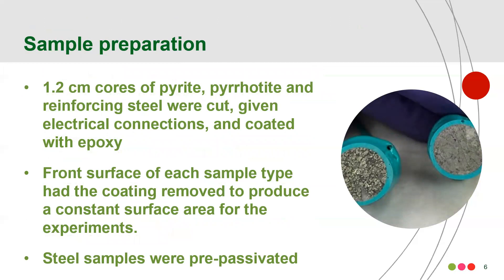Sample preparation followed basic electrochemical principles. 1.2 cm diameter cores of pyrite and pyrite were cut from neurological samples. Similar diameter cylinders were produced from smooth reinforcing steel. They were given electric connections and coated with epoxy, with a different type of epoxy being used for the steel samples based on the type of connection needed. The front surface of each sample type had the coating removed to produce a constant surface area, so that we could calculate current flows on an amp per centimeter squared basis. And then the steel samples were pre-passivated in order to duplicate the conditions in concrete.